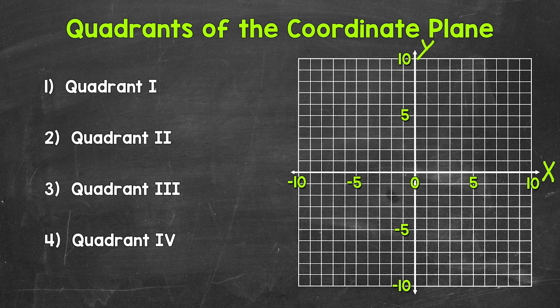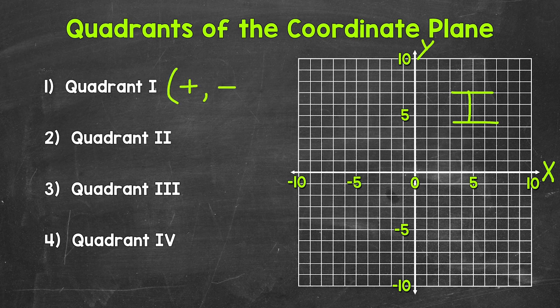Quadrant 1 is right here — it's the upper right quadrant, and we name quadrants using Roman numerals. For quadrant 1, both coordinates are going to be positive: the x-coordinates are positive and the y-coordinates are positive. So if both coordinates are positive, then the point will be in quadrant 1.